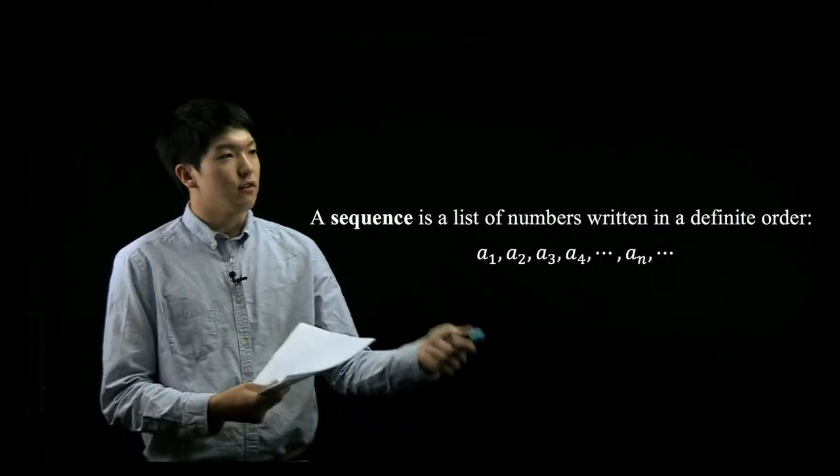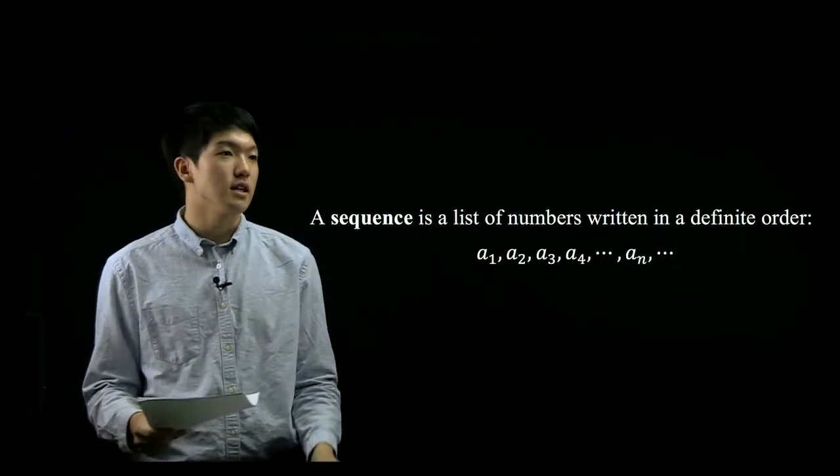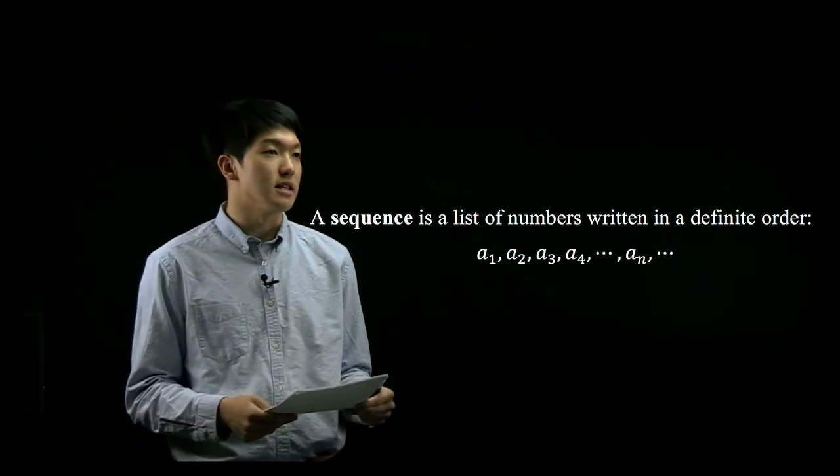So let's begin with the definition. This should be a simple review for you guys. A sequence is basically a list of numbers that lists numbers in a specific pattern. And there are three typical ways to write a sequence and we're going to go over three of them right now.